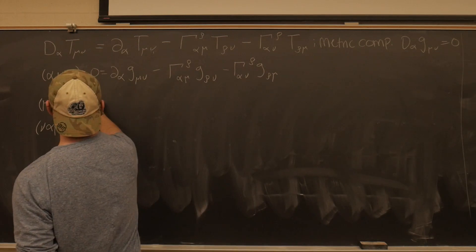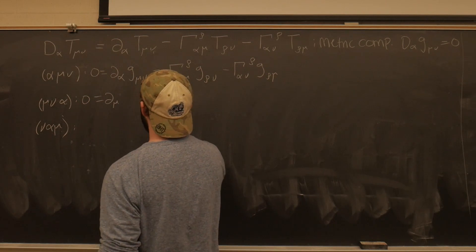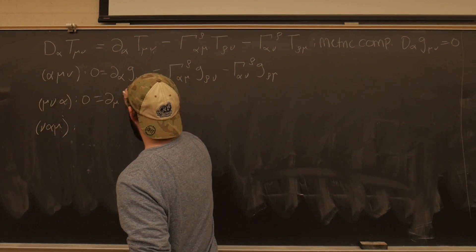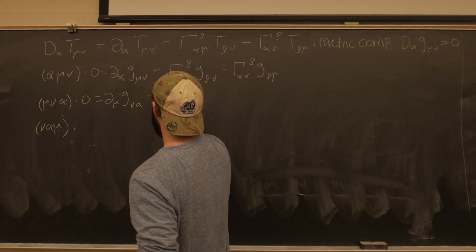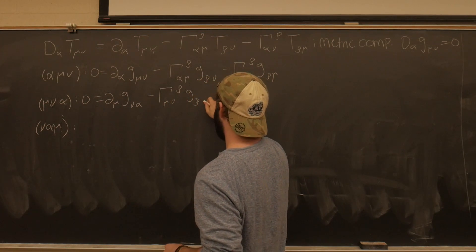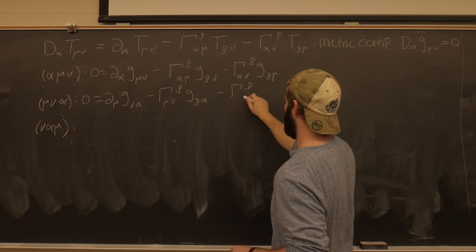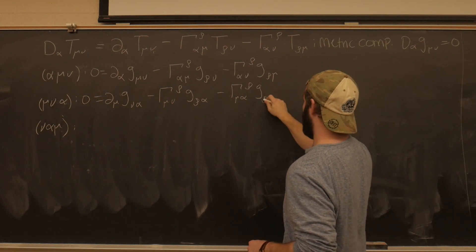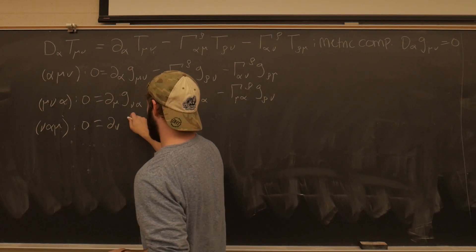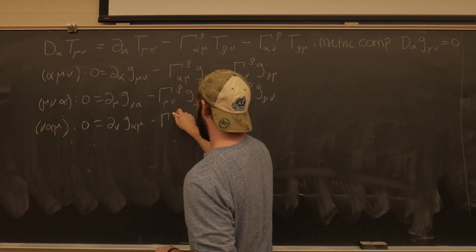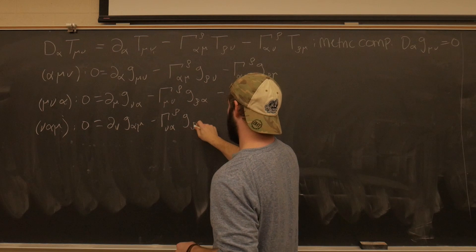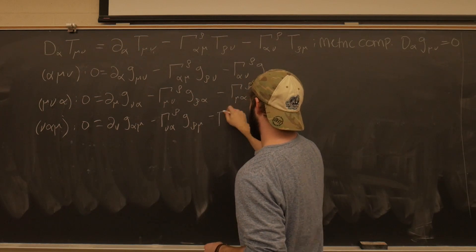Let's do this two more times. We have zero equals partial with respect to mu of G_nu_alpha — this is where it gets tricky — minus gamma_rho_mu_nu G_rho_alpha, minus gamma_rho_mu_alpha G_rho_nu. And the third permutation, nu-alpha-mu, follows the same pattern with nu surviving in the connection coefficients. We'll call these equations 1, 2, and 3.